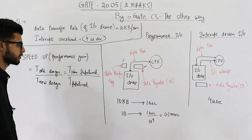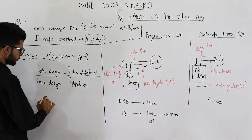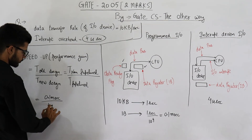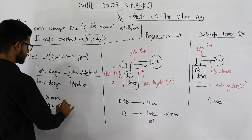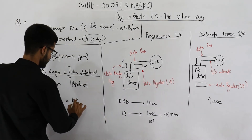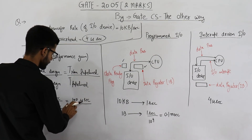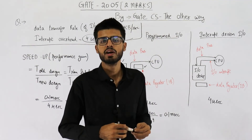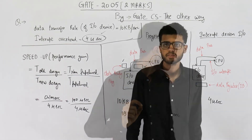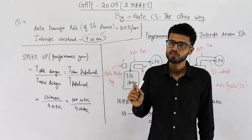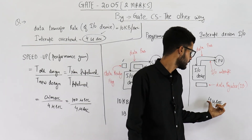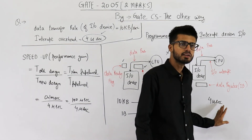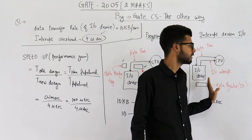We can now divide both values to get the performance gain. Time taken by the old design is 0.1 milliseconds, which equals 100 microseconds. Time taken by the new design is 4 microseconds. So performance gain equals 100 microseconds divided by 4 microseconds, which equals 25. The answer to this question is 25. In interrupt-driven I/O, the CPU does useful work and only 4 microseconds is spent initiating the data transfer.